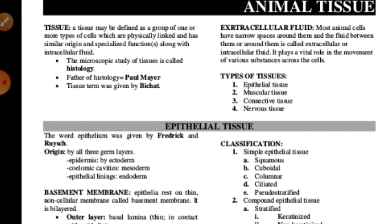A group of one or more types of cells which are physically linked, have a similar origin, and have specialized functions — that is known as tissue. The microscopic study of these tissues is known as histology. The father of histology was Paul Mayer, but the word 'tissue' was given by Bichat. Sometimes Bichat is also known as the father of animal histology.